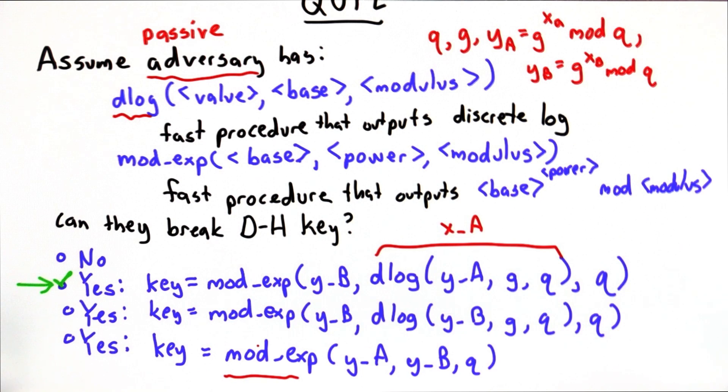And it's necessary that we can compute modular exponentiation efficiently, because otherwise the legitimate participants in the protocol wouldn't be able to determine their keys. So we'll look at that soon.